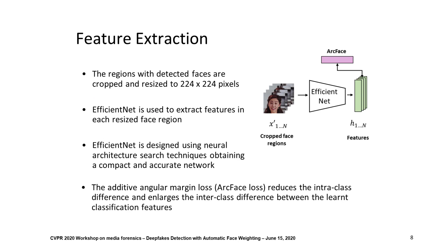After processing the input frames with MTCNN, we crop the regions where faces have been detected and resize them to 224 by 224 pixels. Then, EfficientNet is used to extract features within those regions. EfficientNet is a neural network that has been designed using neural architecture search techniques, obtaining both a compact and accurate network.